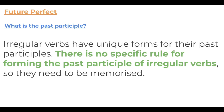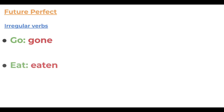Irregular verbs, on the other hand, have no specific rule for forming the past participle — unfortunately they need to be memorised. The good news is that they tend to be very common verbs, so you're more likely to already know them. For example: 'go' becomes 'gone', 'eat' becomes 'eaten', 'sing' becomes 'sung'. There's no real pattern, and importantly they are different from the simple past form.